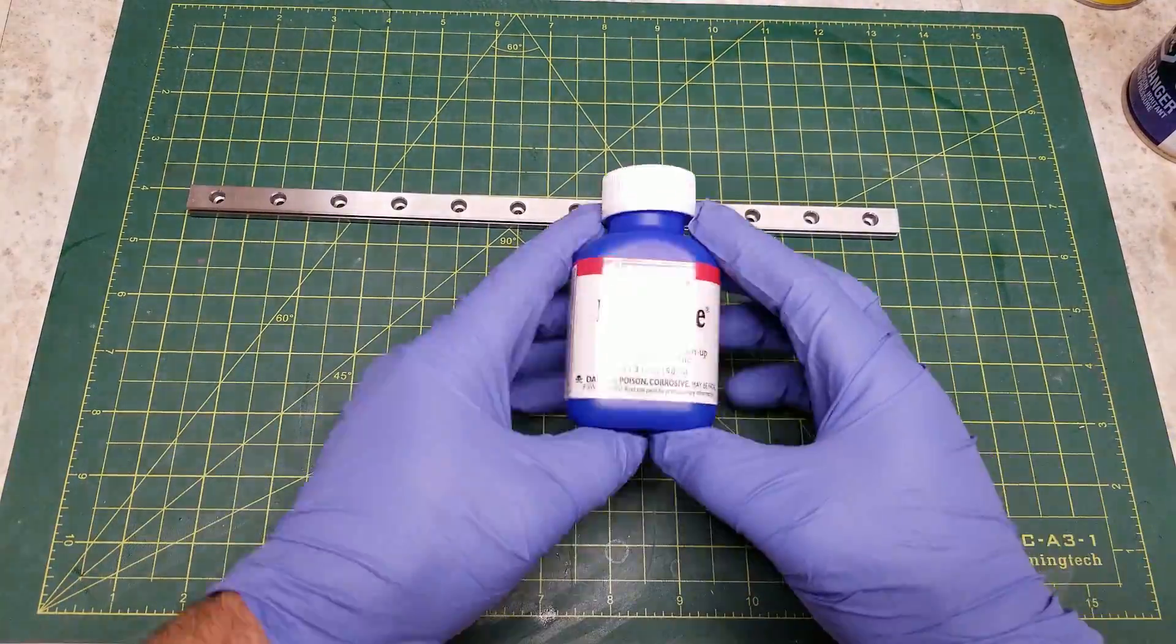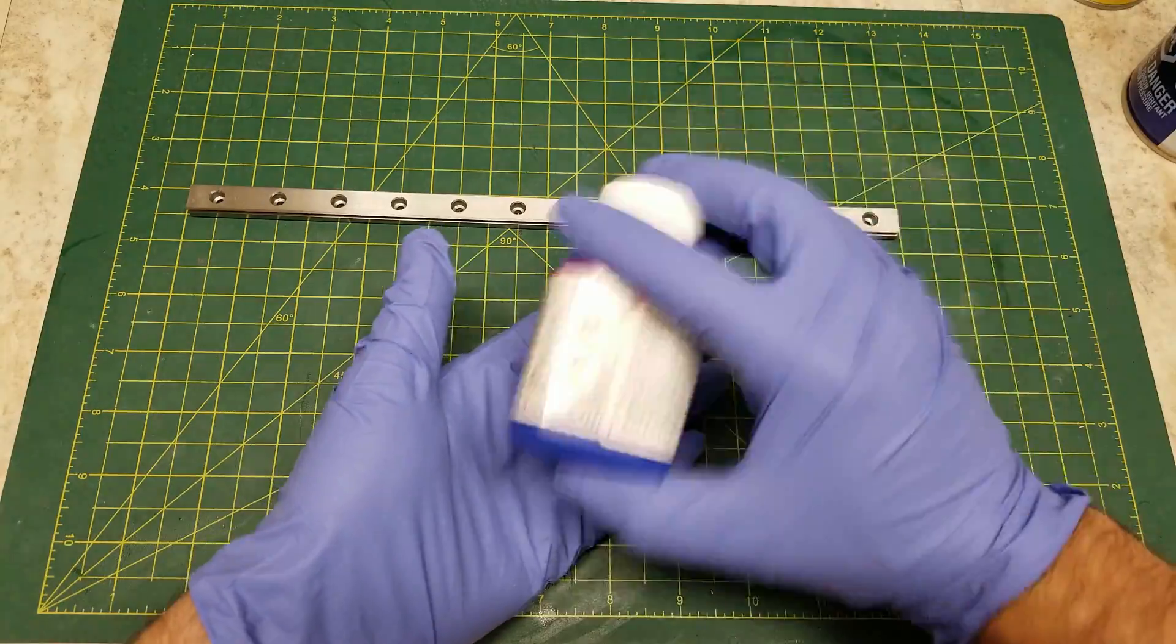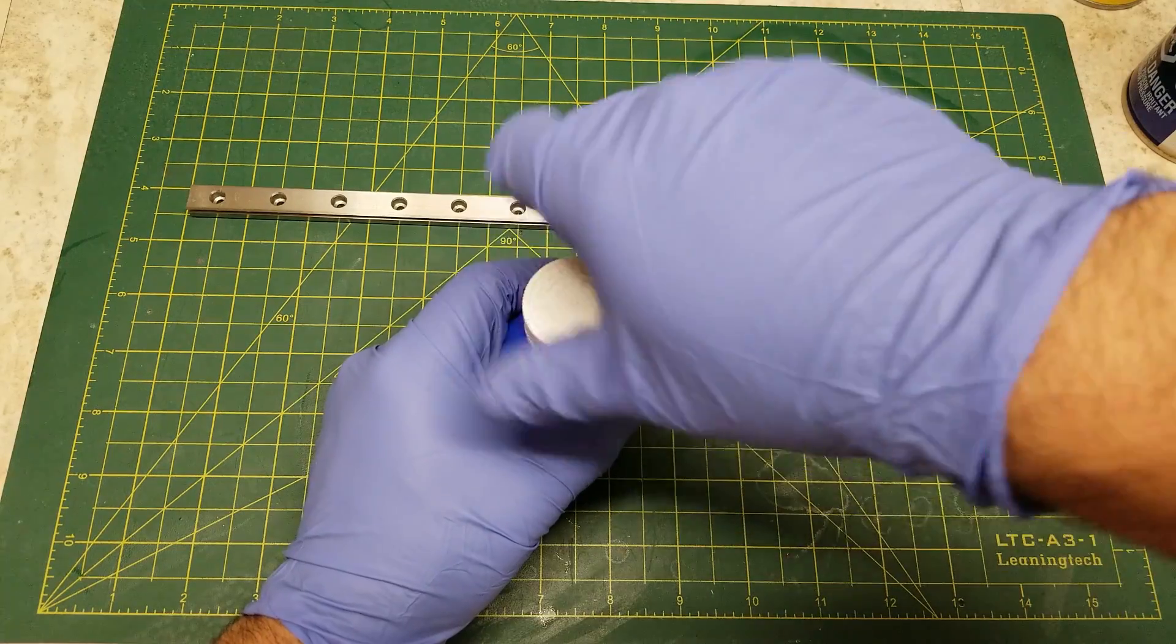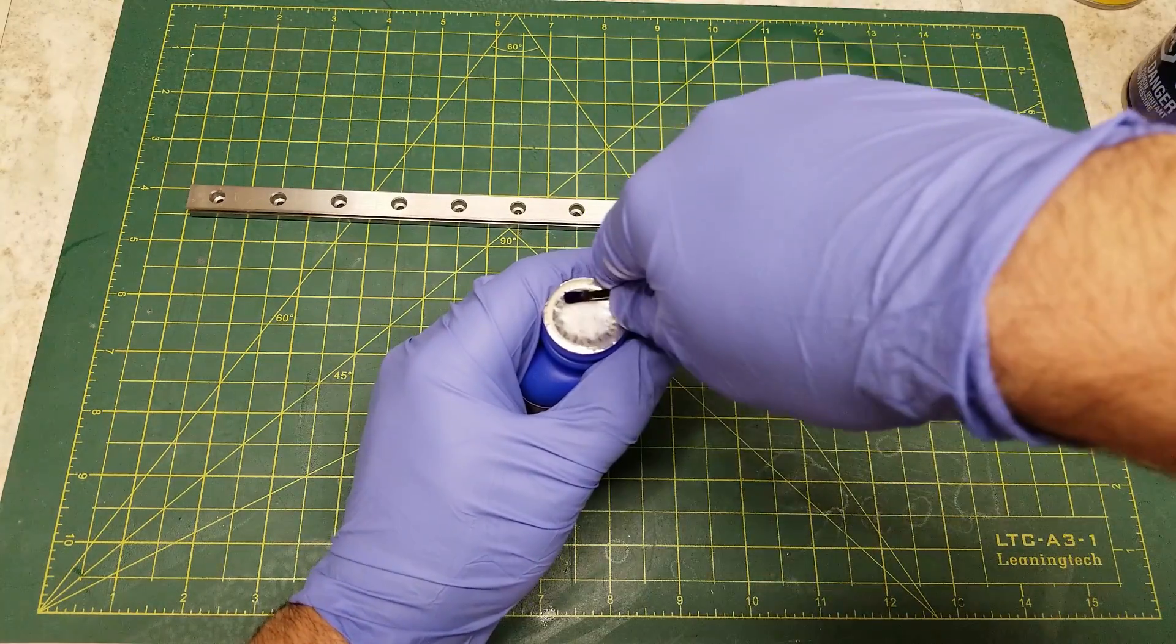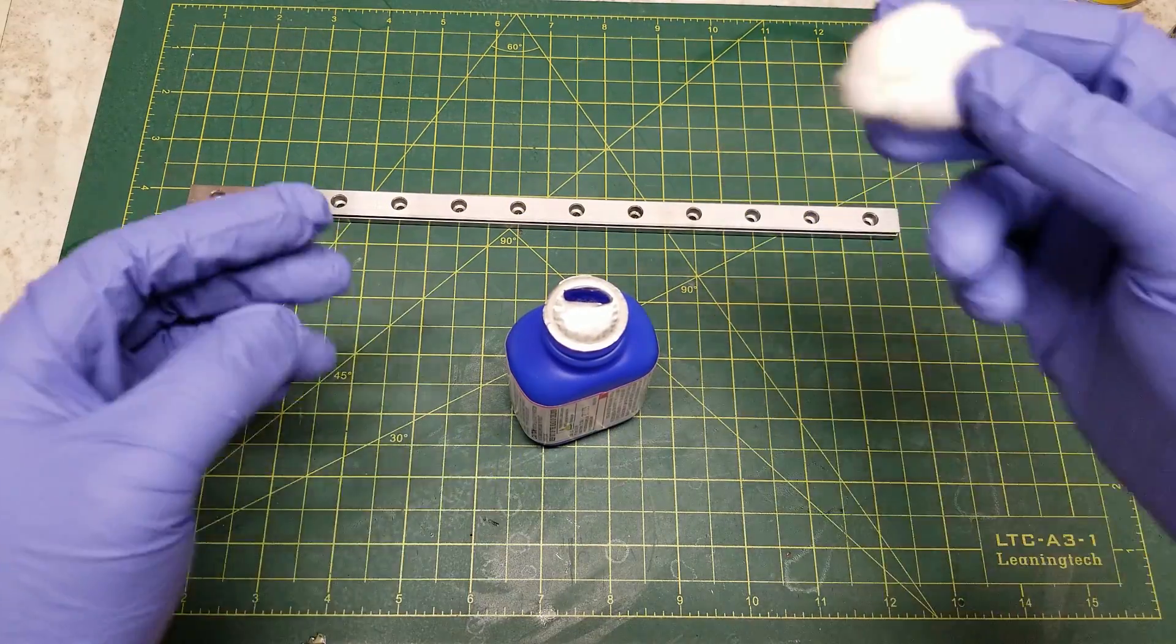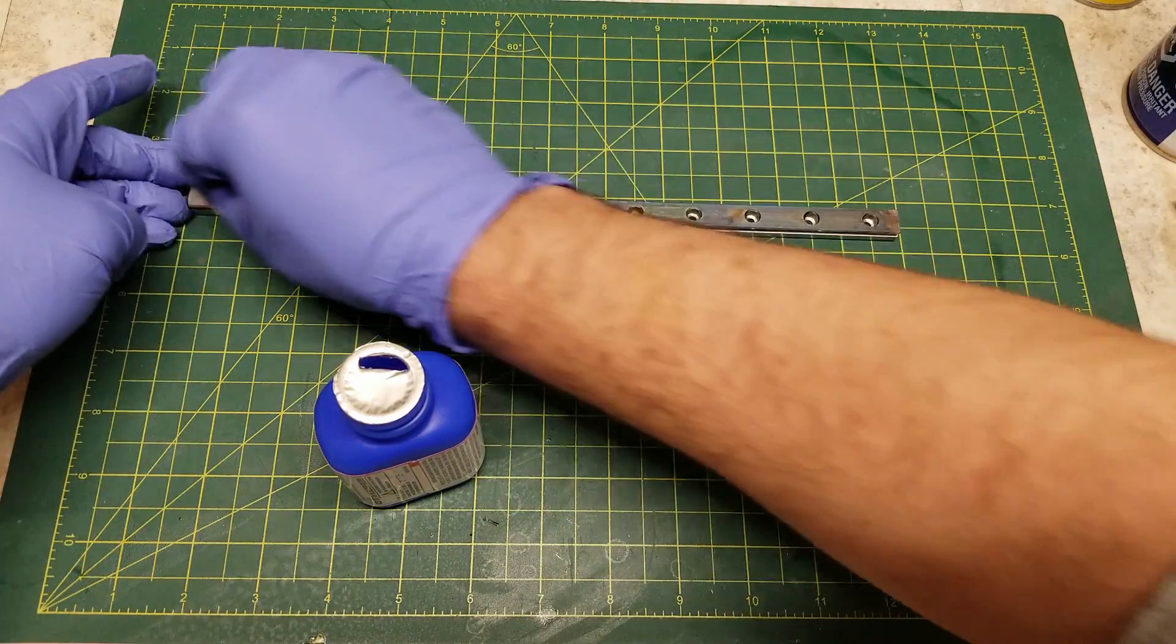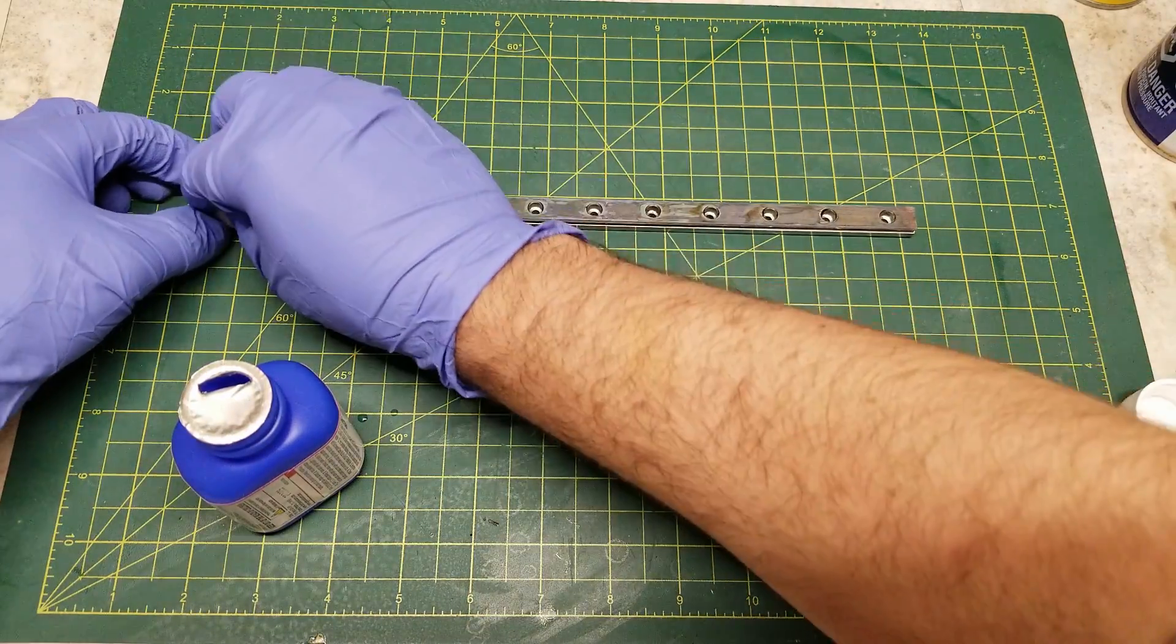So the blue we're using here is from Birchwood Casey. I just got it off Amazon. Shake the bottle before opening and you're going to apply the blue using cotton swabs. You're not going to want to douse it. You're going to want to apply an even coat to all sides of the rail and simply brush it on. It's okay if it does look a little bit splotchy at first. We will come back to that later.